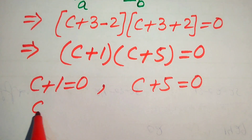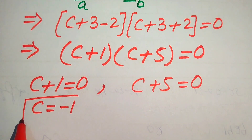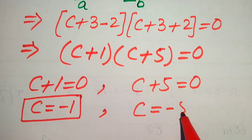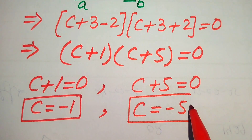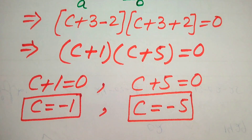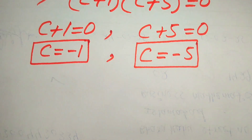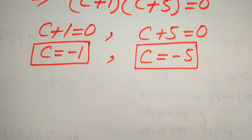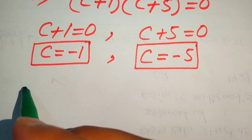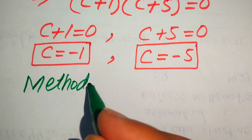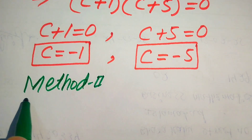From the first case we get c = -1, and from the second case we get c = -5. So we have two roots of the given equation. Now we solve this problem using the second method, and at the end we will check which of these roots are solutions and which are extraneous roots.